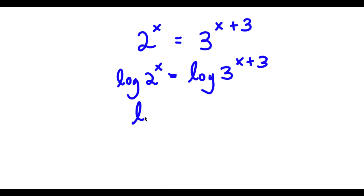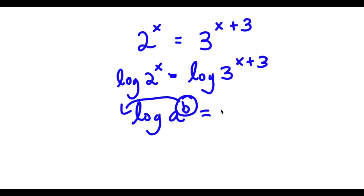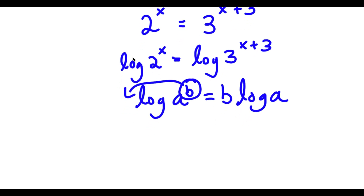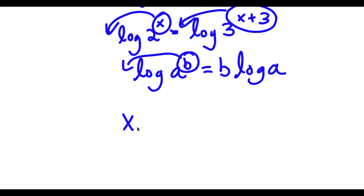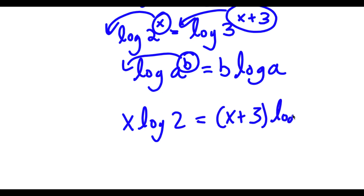Now, if I have something in the form log a to the power of b, I can move this exponent b to the front — this equals b times log a. So in this case, I can move x to the front for log 2 to the power of x and x plus 3 to the front for log 3. So now I have x times log 2 is equal to x plus 3 times log 3.